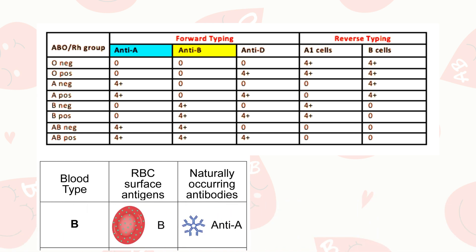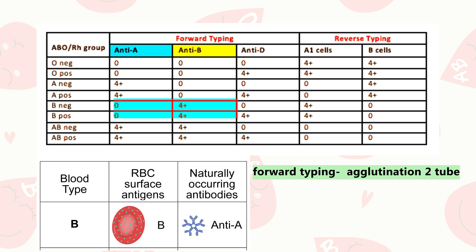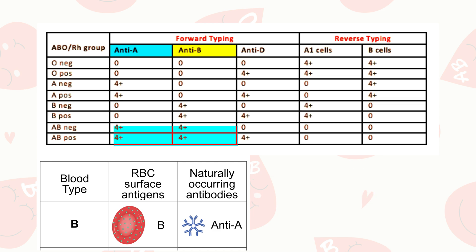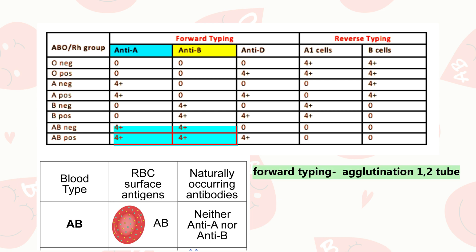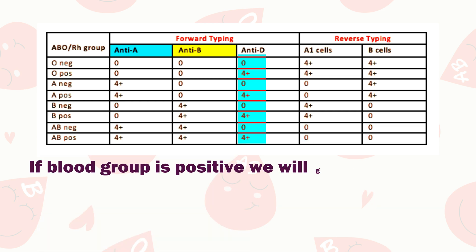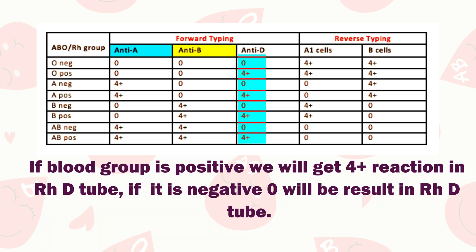For blood group B, the B antigen is present on RBCs and reacts with anti-B, causing agglutination in forward typing; anti-A gives a 0 result. Antibody A is present in plasma and reacts with A cells in reverse grouping, resulting in agglutination in the first tube. For blood group AB, antigens A and B are present on the RBC surface, causing agglutination in the first two tubes of forward grouping; antibodies are absent, giving a 0 result in reverse typing. If RhD positive, a 4+ reaction is seen in the RhD tube; if negative, the result is 0.